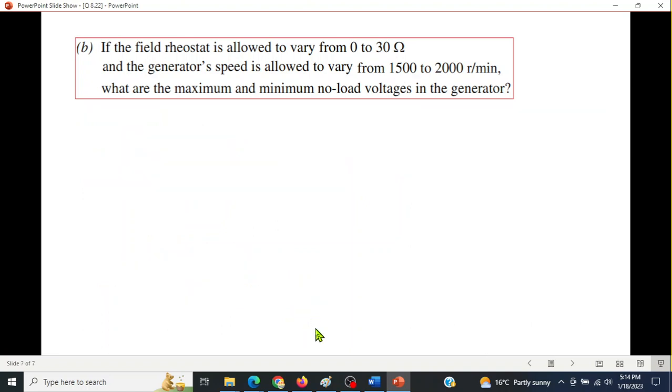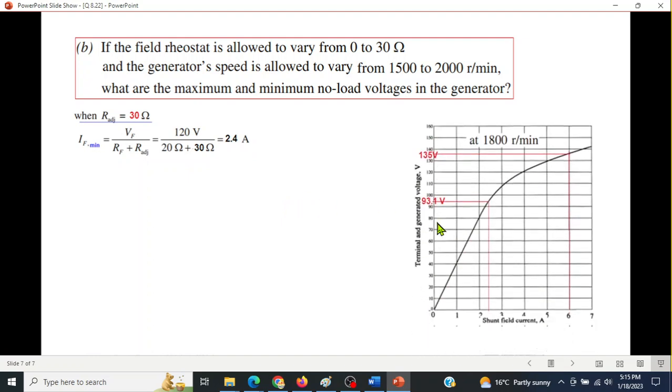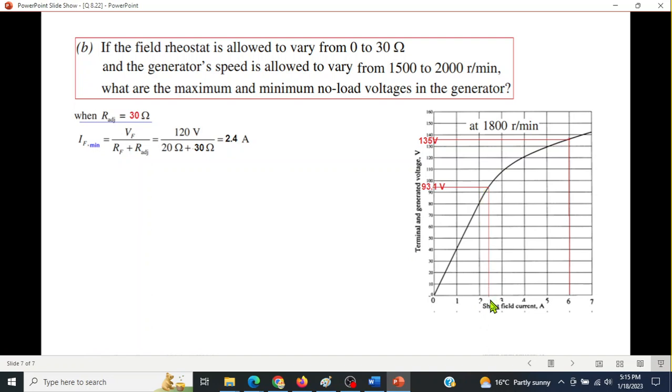Now, let's see the minimum scenario. The resistance is now 30, so the minimum current will be 2.4 field current. And again, from this graph, for field current 2.4, the Ea0 will be 93.1. So the same technique, but now we will be using this lower resistance, lower speed, because for lower speed we get lower voltage.